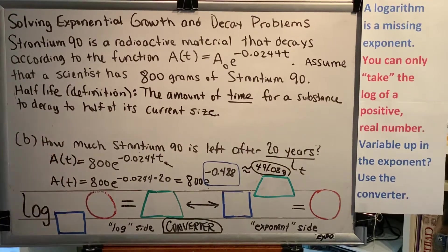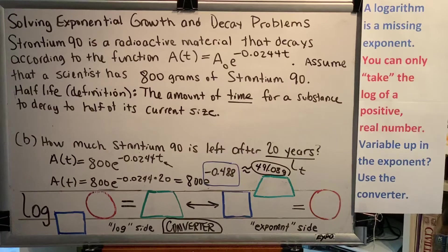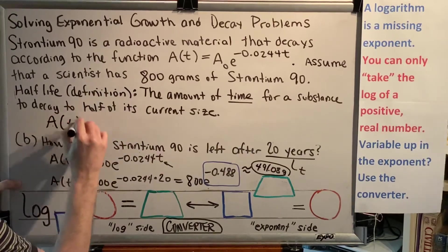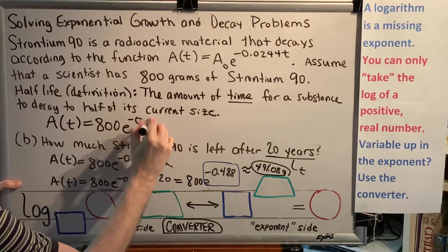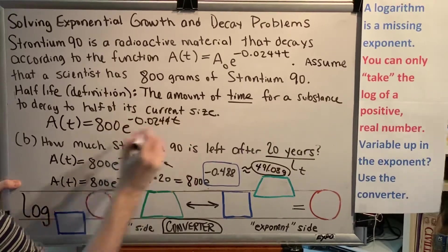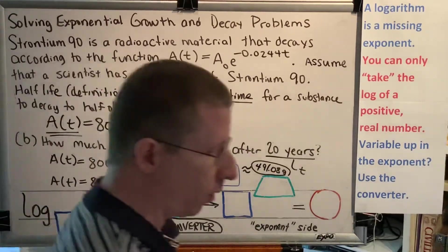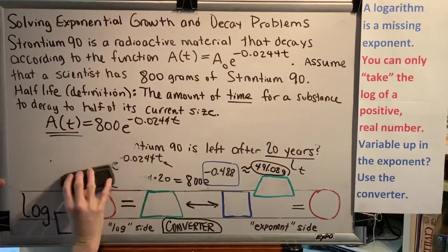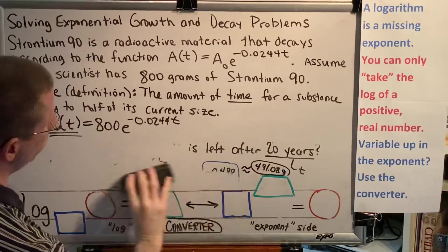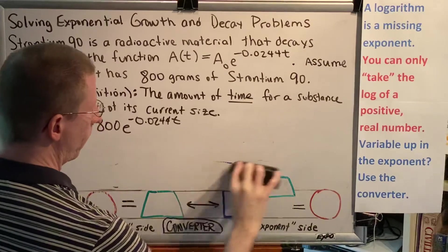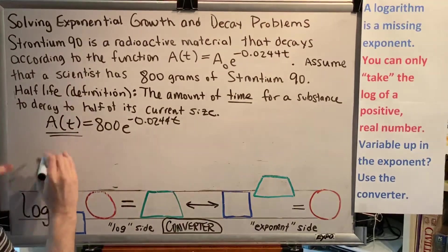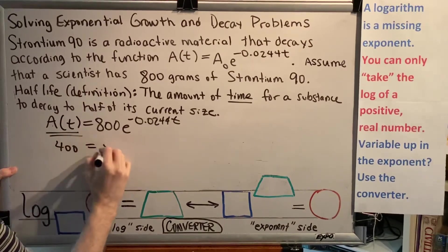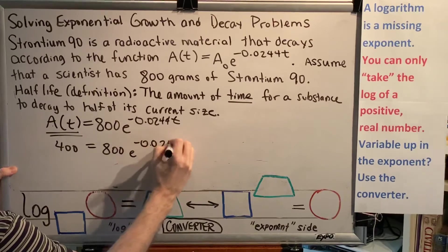All right. So with this definition, we should be able to answer the question. The current size is 800 grams, so half of that current size would be 400 grams. So what we're going to do is we're going to use our same equation here: A(t) = 800e^(-0.0244t). And we're going to replace the left side of our equation, A(t), which is where amounts go, with the number 400, and then solve for t. That will tell us the time. Half-life is a time.